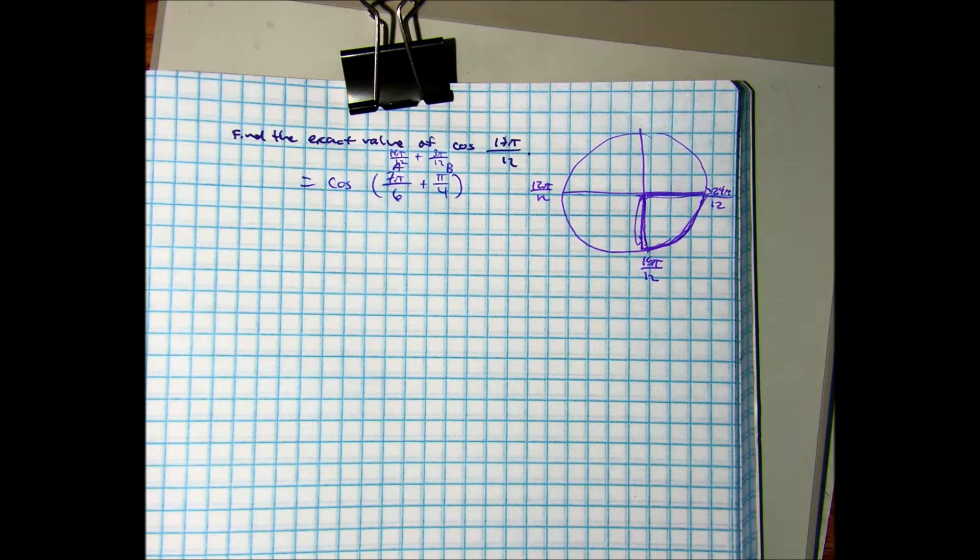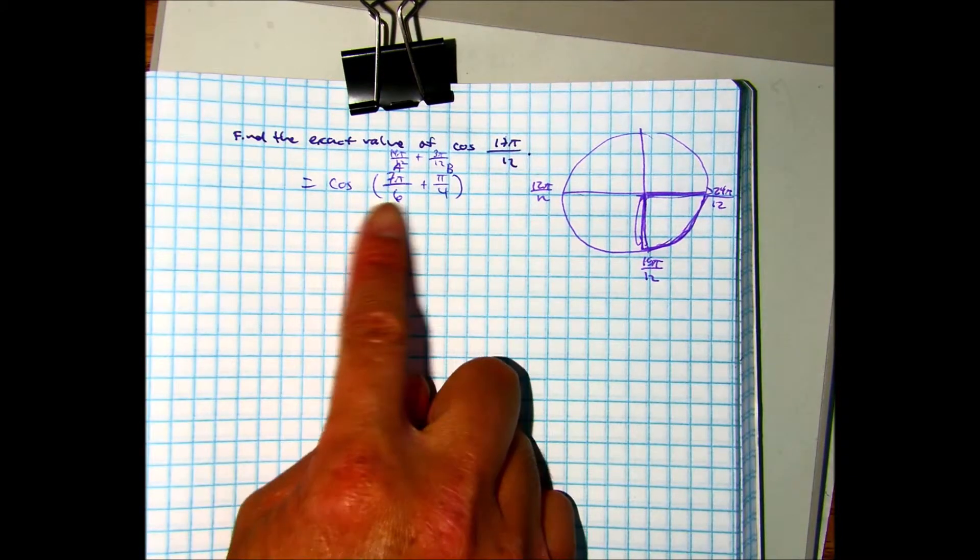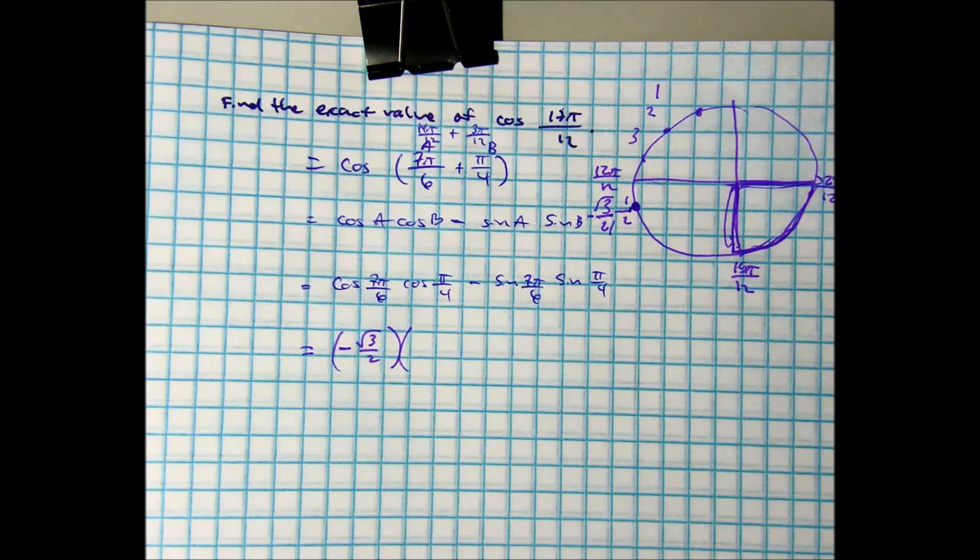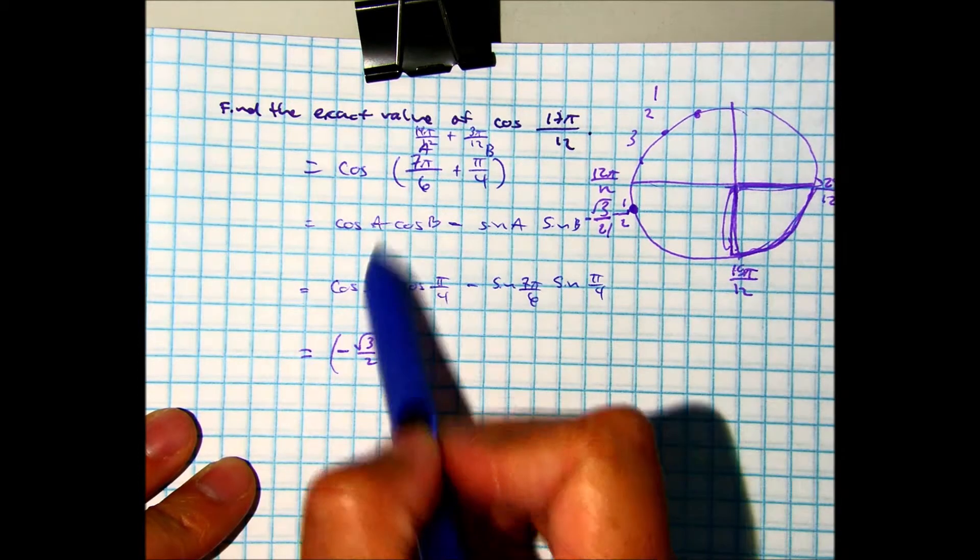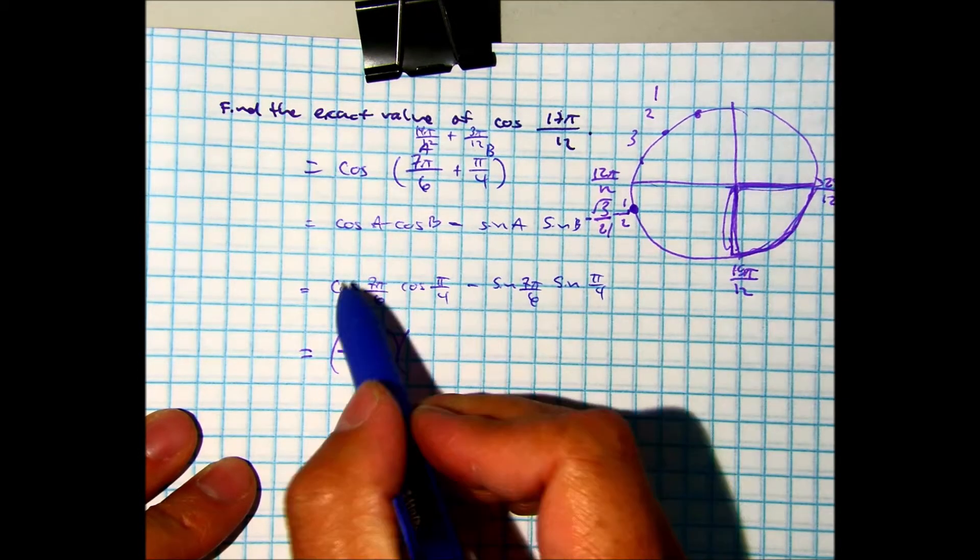With your partner, I want you to explain other combinations that work, and then I want you guys to finish the problem together. Ready? So, write down your formula, do your substitutions of your A's and B's, and then we're just evaluating.